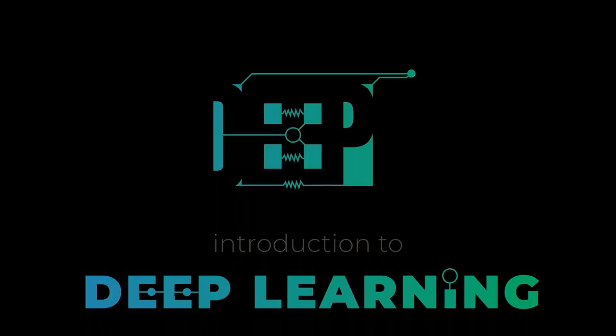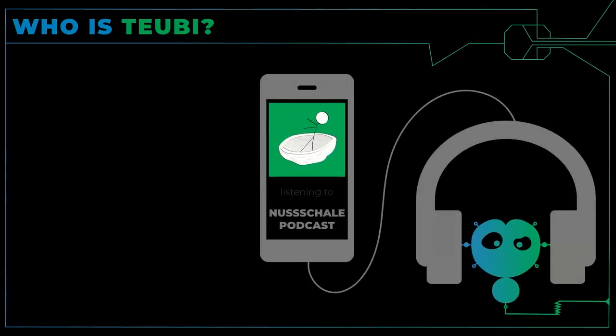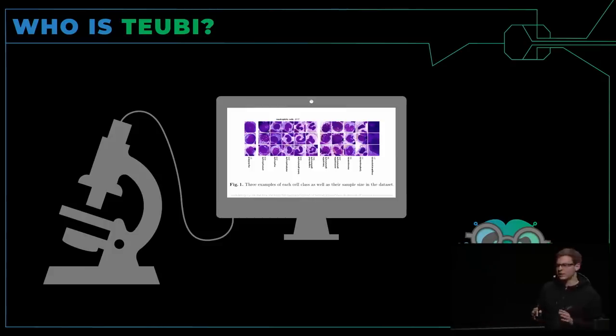Good morning and welcome to introduction to deep learning. The title will tell you what this talk is about. I want to give you an introduction on how deep learning works, what happens inside this black box. But first of all, who am I? I'm Toybee, a German nickname. You might have heard my voice before because I host the Nusschale podcast where I explain scientific topics in under 10 minutes. In my day job, I'm a research scientist at an institute for computer vision. I analyze microscopy images of bone marrow blood cells and try to find ways to teach the computer to understand what it sees.